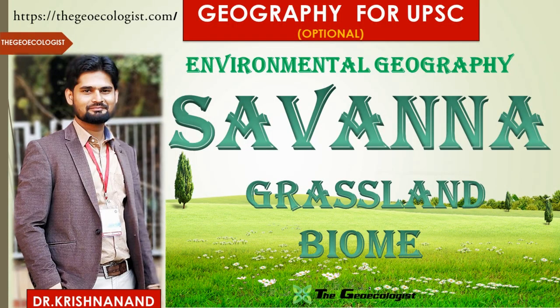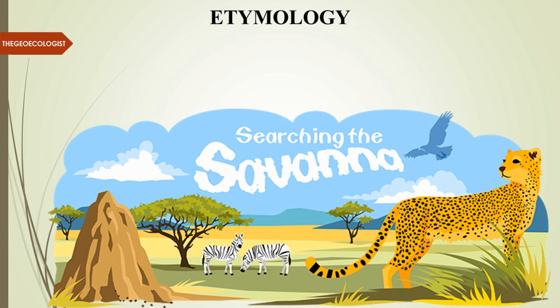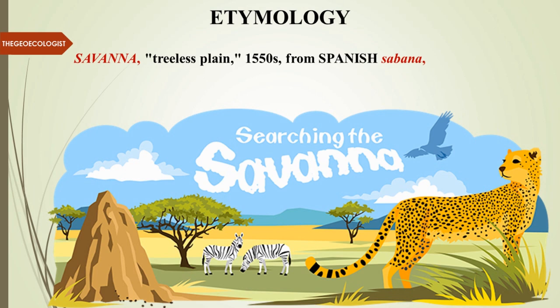Welcome to the Geoecologist. In this session on environmental geography, we are going to learn about the Savannah grassland biome. Let's understand the etymology of the word 'Savannah' itself. It comes from Spanish 'sabana' which means treeless plain — a plane area which is treeless. That is the basic meaning of the word, from the early 16th century, around the early 1600s.